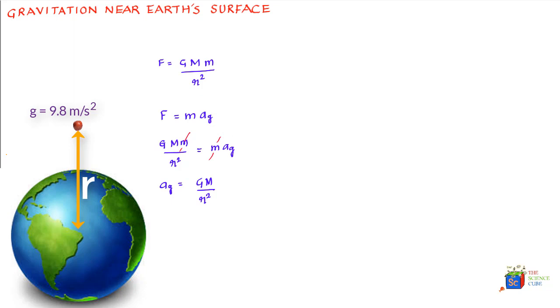However, any g value measured at a given location will differ from ag value calculated in this equation due to three reasons. One, the Earth's mass is different at different places, or more accurately, the density is different in different places, and therefore the ag value will change. Earth is not a perfect square, that is number two.